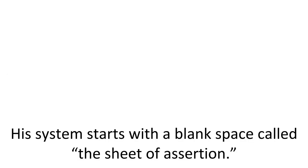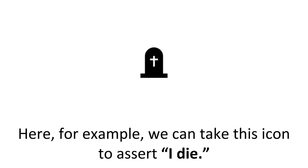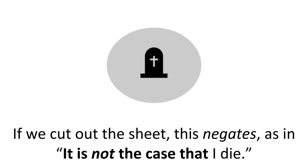His system starts with a blank space called the sheet of assertion. This sheet is clearly there in front of us, so whatever we put on it counts as asserted. Here, for example, we can take this icon to assert 'I die.' If we cut out the sheet, this negates — as in, it is not the case that I die.